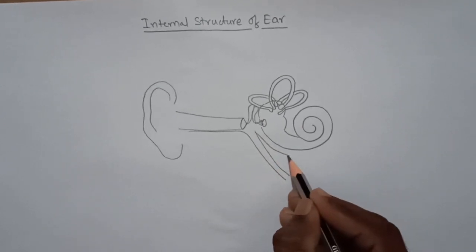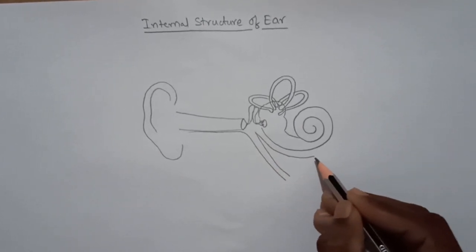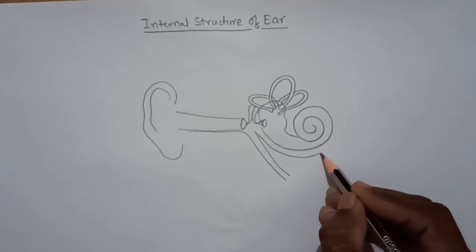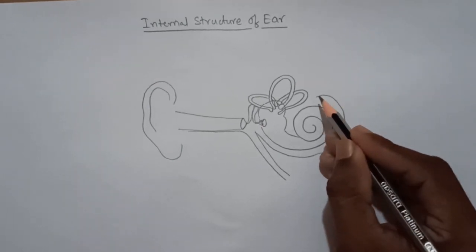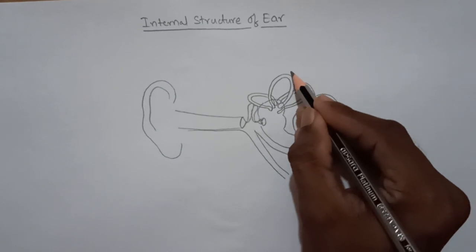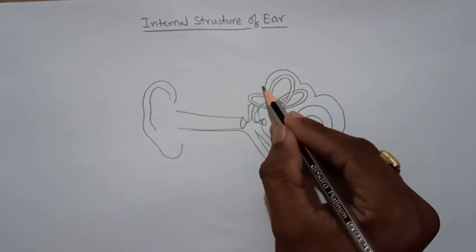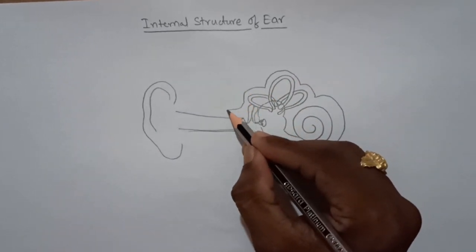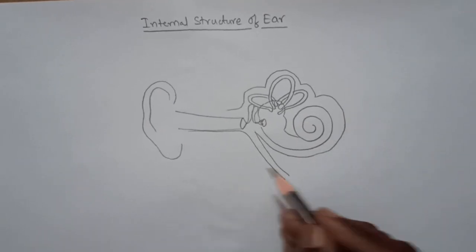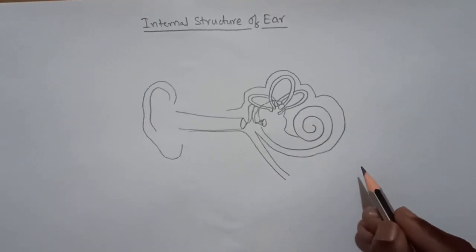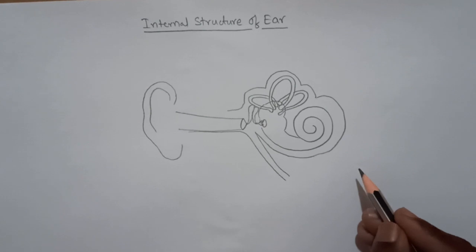And the bony labyrinth—the bones which are around the internal ear. With this, the diagram is completed. Now we are moving to labeling.